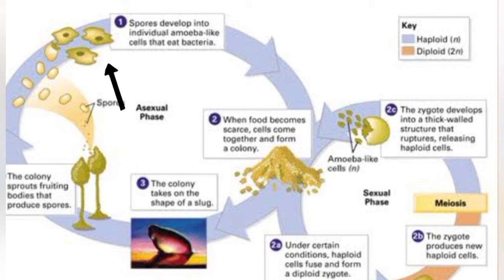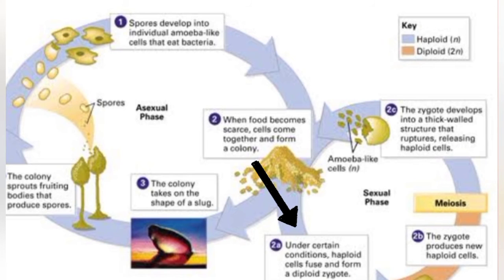In the cellular slime mold life cycle: spores develop into individual amoeba-like cells that eat bacteria. When food is scarce, cells aggregate. The colony takes on the shape of a slug. The colony then sprouts fruiting bodies that produce sporangia, from which spores are dispersed. One spore becomes an individual amoeba-like cellular slime mold. This is asexual reproduction.